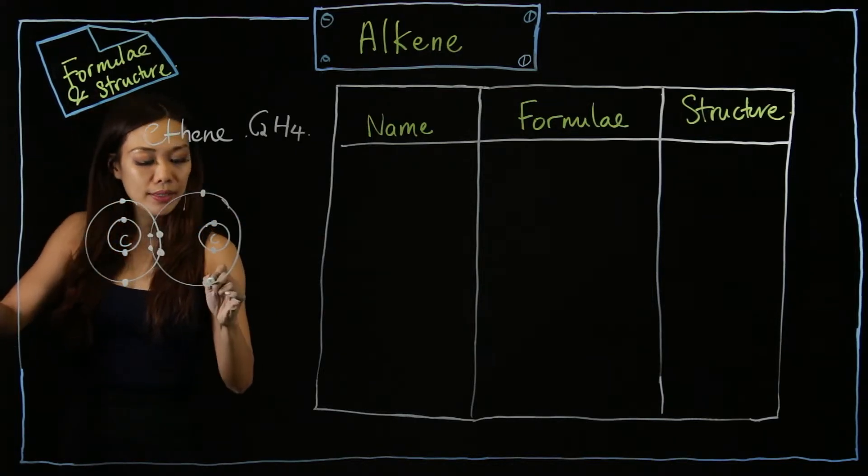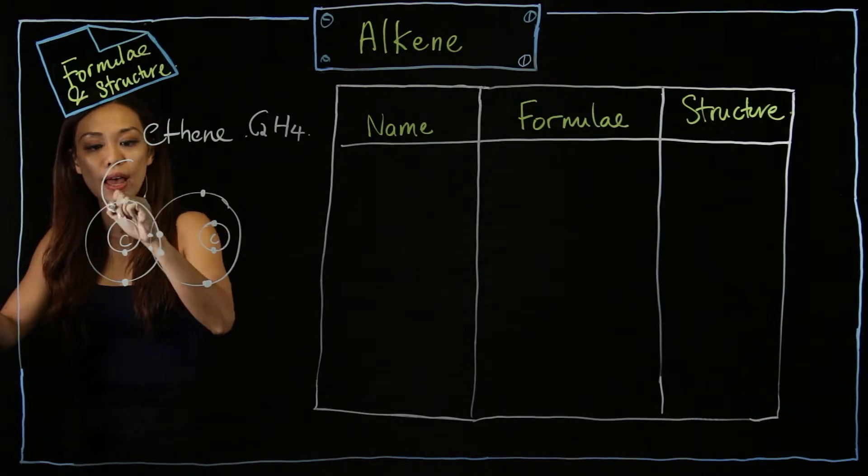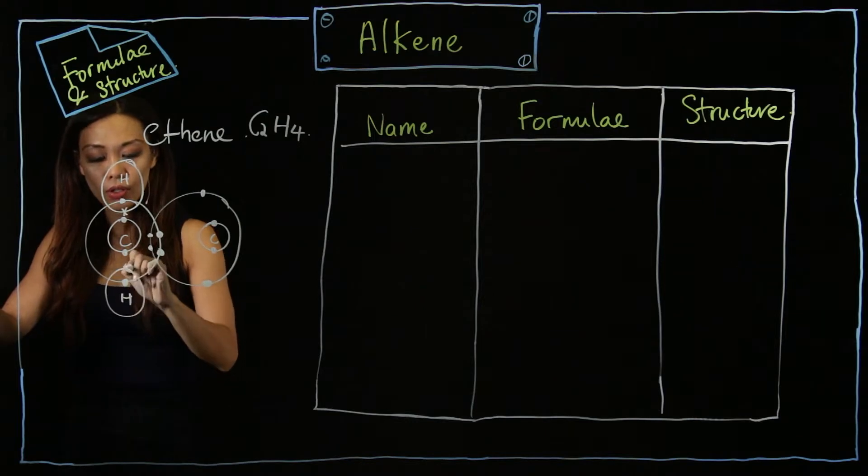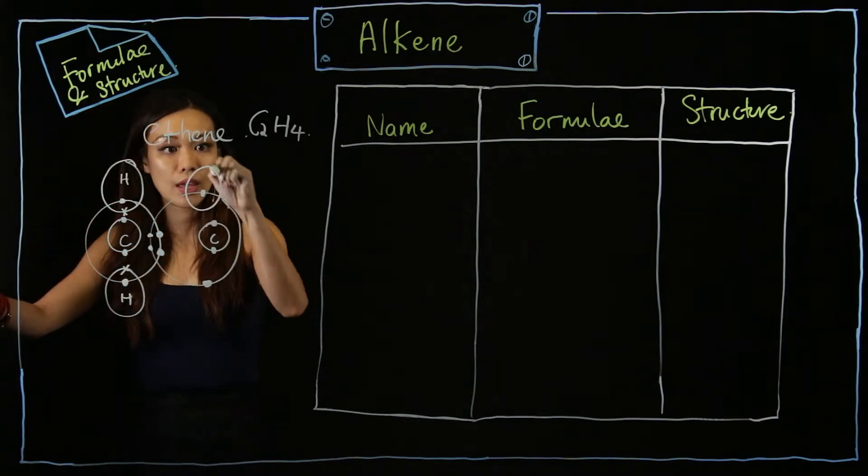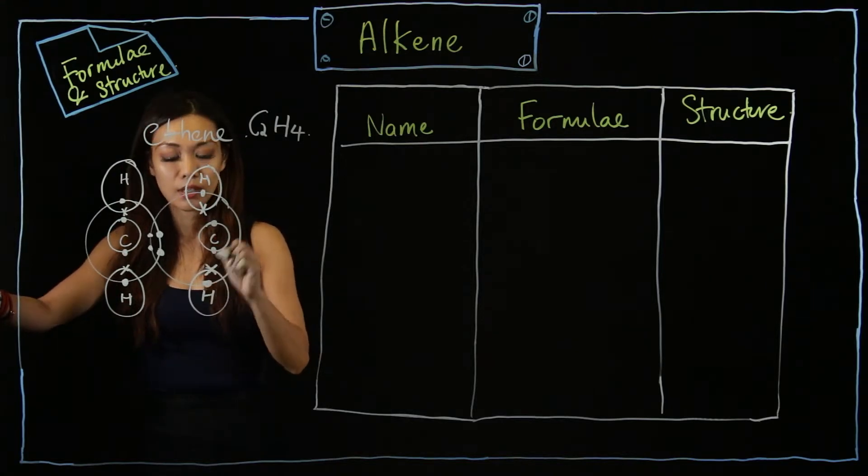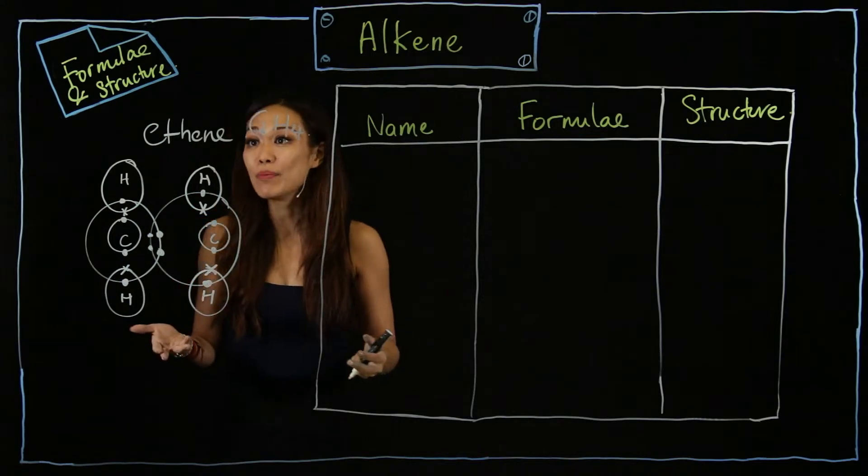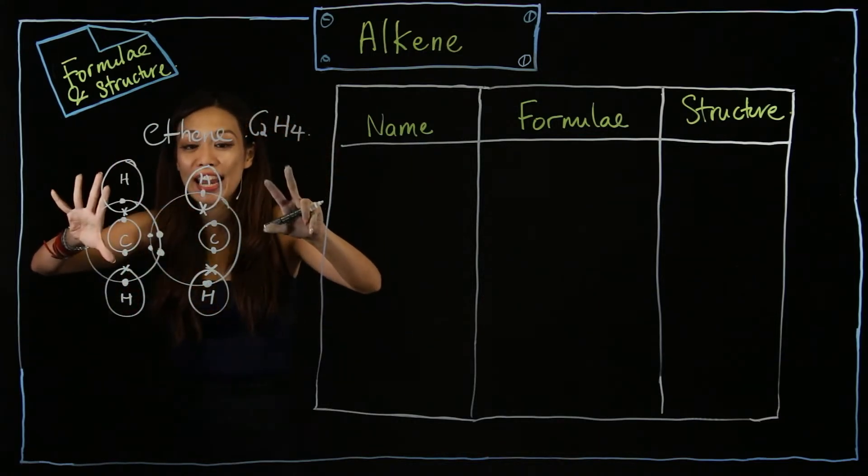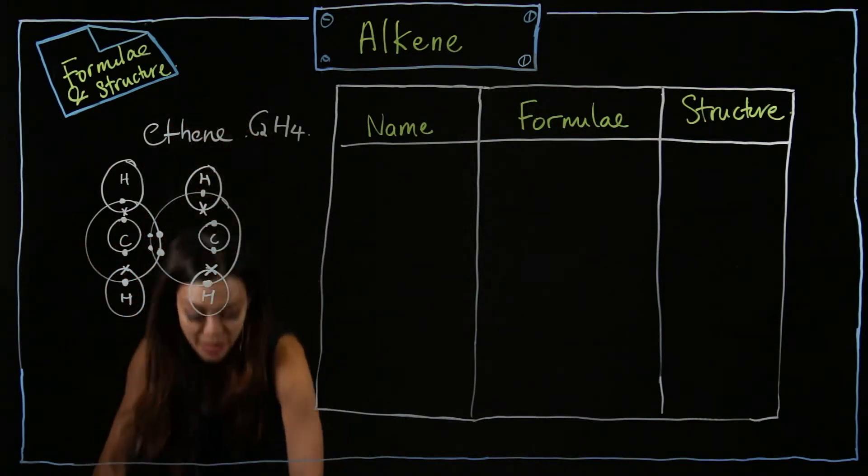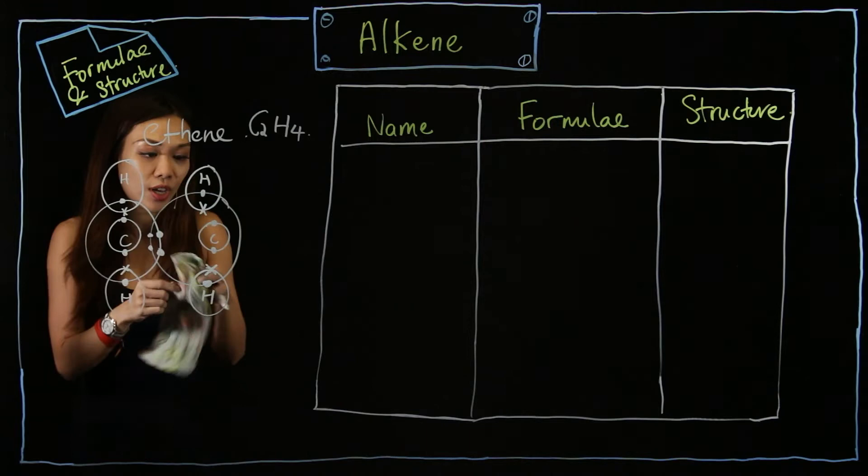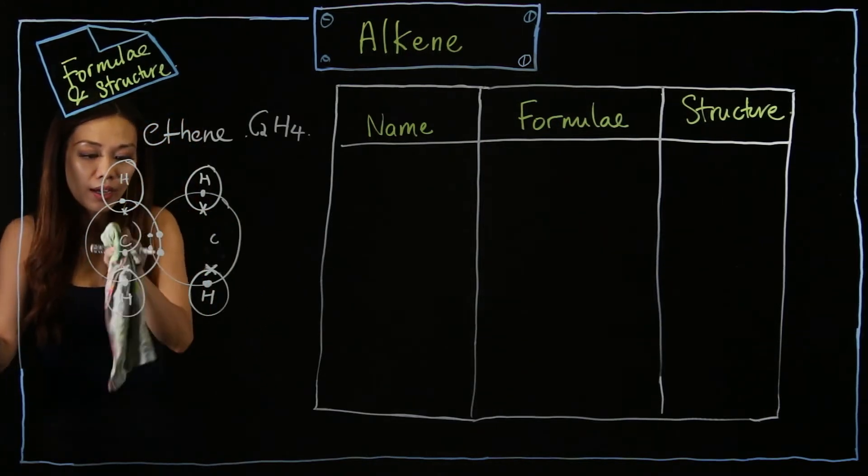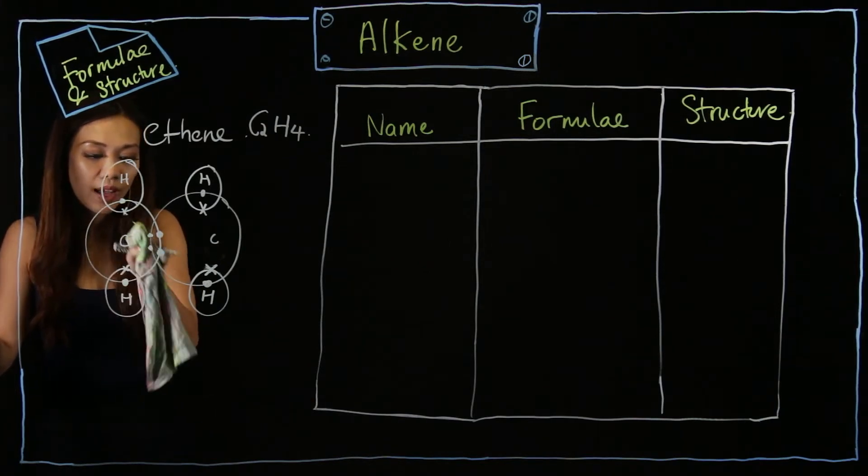And one here and one here. So you notice this is your H, this is H, this is H, and this is H here. Like I mentioned, many times when we are drawing organic structures, they don't need you to draw all the shells out. So basically, you have to clean away the inner shell. I'm going to clean away the inner shell.